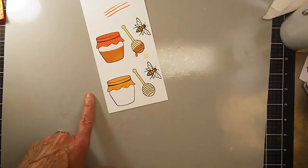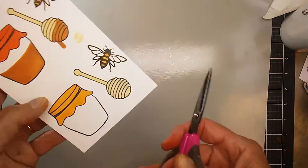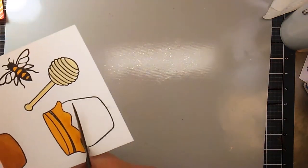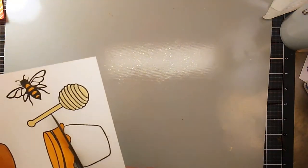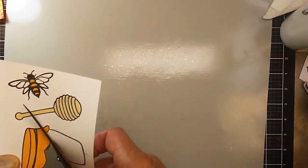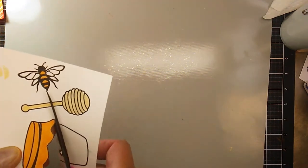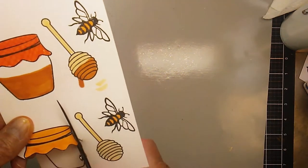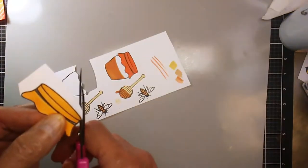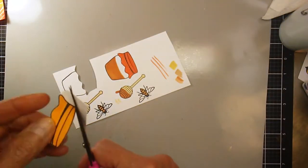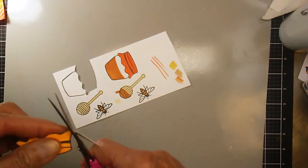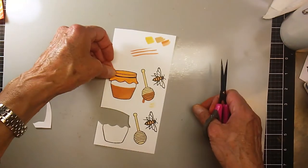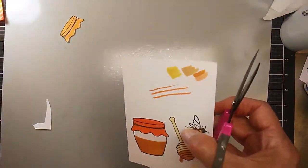I'm going to fussy cut that yellow looking cap out because I wanted to add some dimension to the honey pot on the front. I actually ended up fussy cutting all of these pieces out including all the bees and one of the applicators.